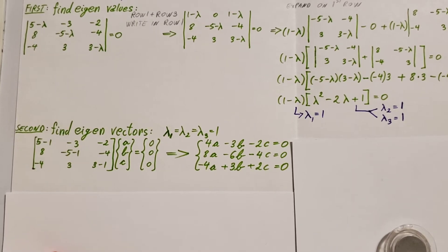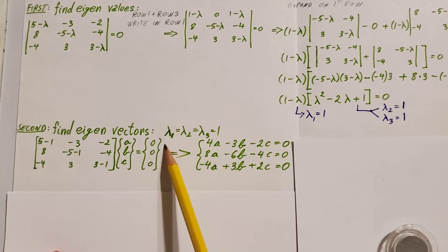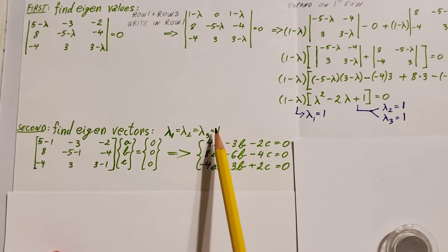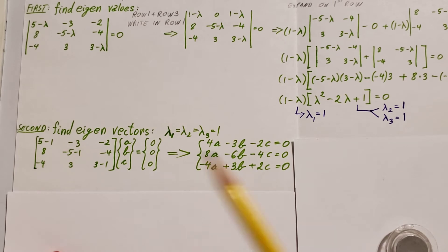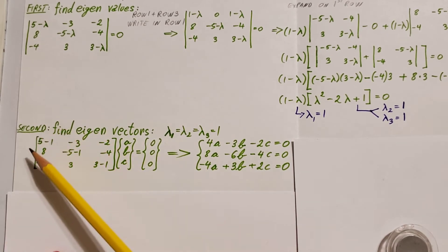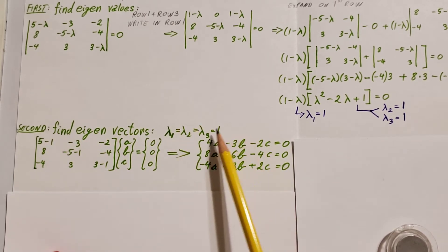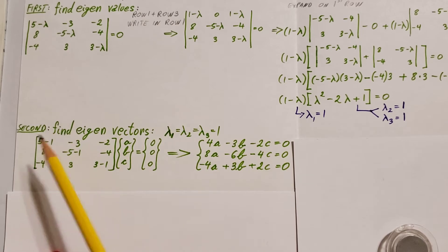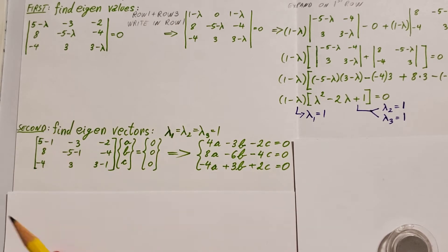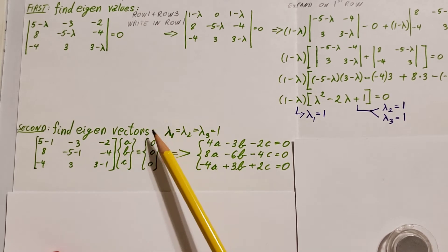Now that we have the three eigenvalues, we can go ahead and start working on our eigenvectors. Lambda one, two, three are all equal to one, so let's plug into our equations. We're going to take our A minus the lambda we're working with, which is one for all three of them — so minus one, minus one, minus one — times the vector with components A, B, C equals the zero vector: zero, zero, zero.